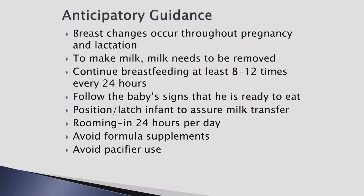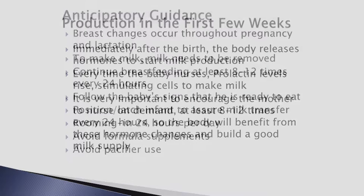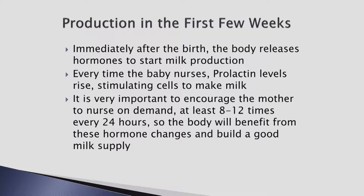Breast changes occur throughout pregnancy and lactation. To make milk, milk needs to be removed. Continue breastfeeding at least 8 to 12 times every 24 hours. Follow the baby's signs that he is ready to eat. Position and latch infant to assure milk transfer. Room in 24 hours. Avoid formula supplements and pacifier use. Immediately after birth, the body releases hormones to start milk production. Every time the baby nurses, prolactin levels rise, stimulating cells to make milk. It is very important to encourage the mother to nurse on demand at least 8 to 12 times every 24 hours so the body will benefit from these hormone changes and build a good milk supply.